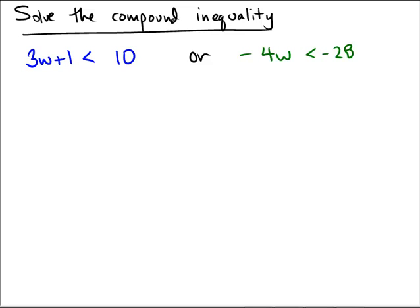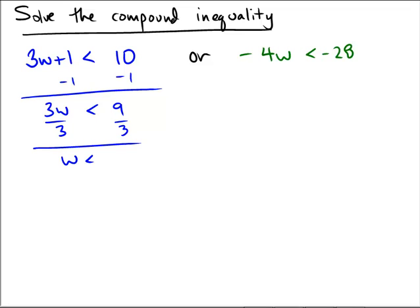So first key is to actually solve the inequalities separately. So this one's minus 1 minus 1 to give me 3w less than 9. Divide by 3 to yield w is less than 3.